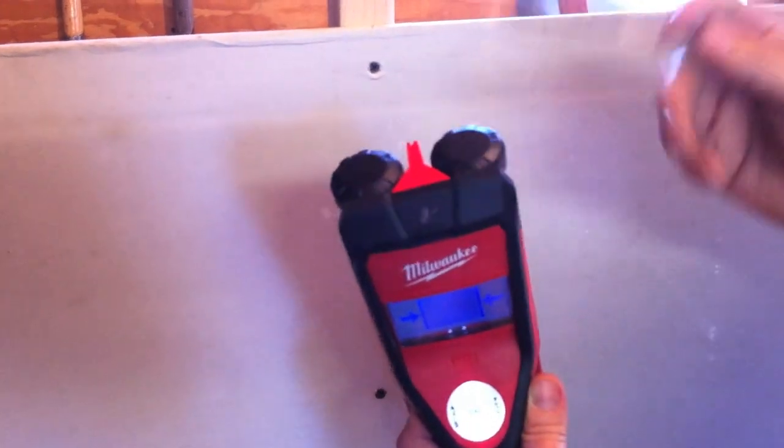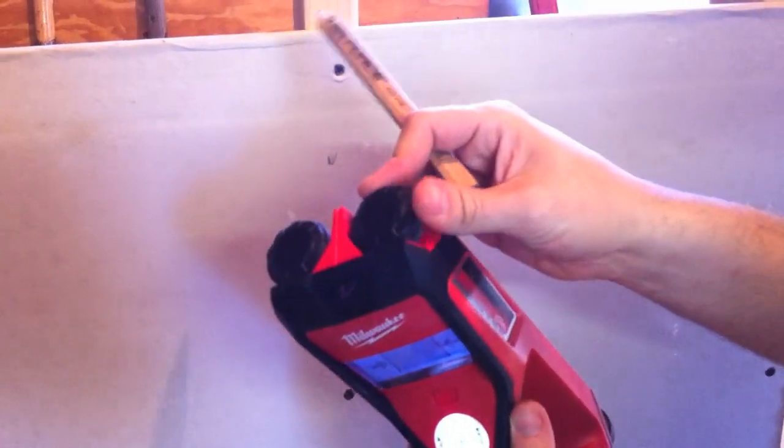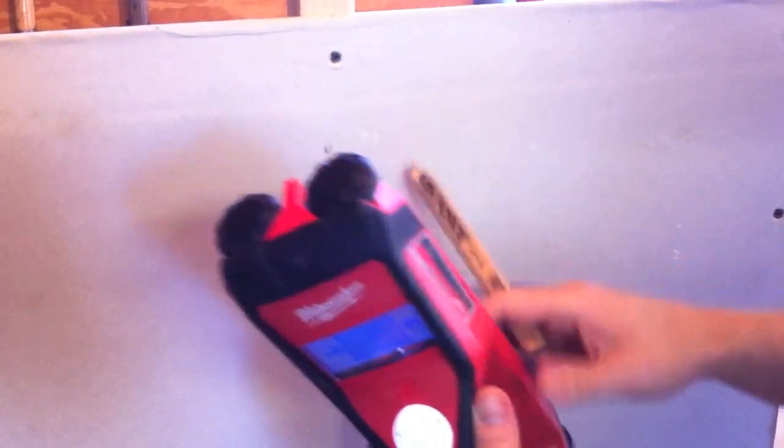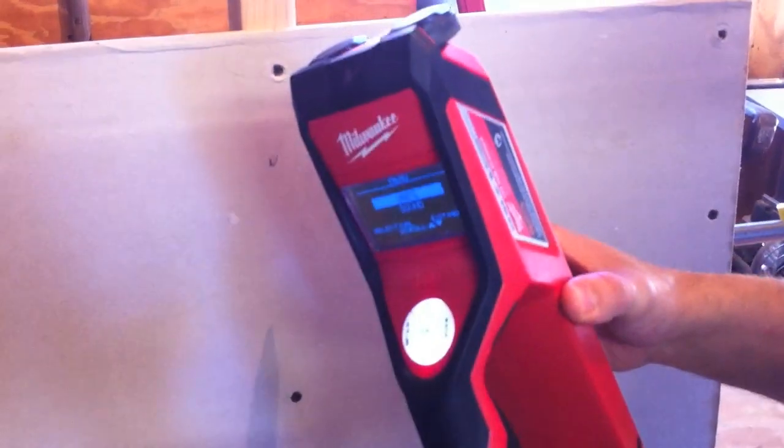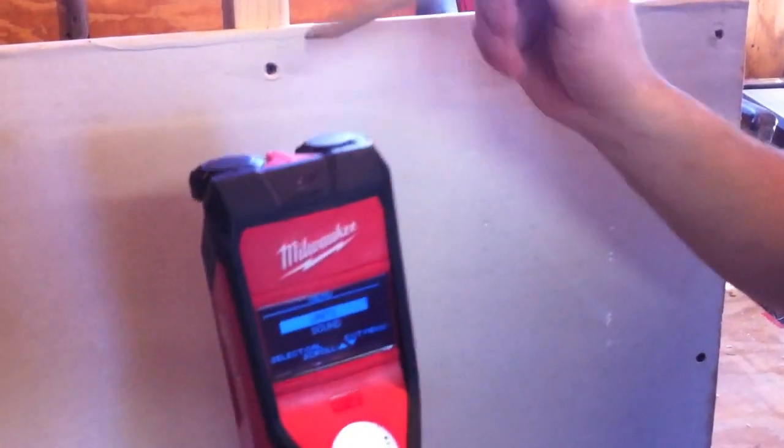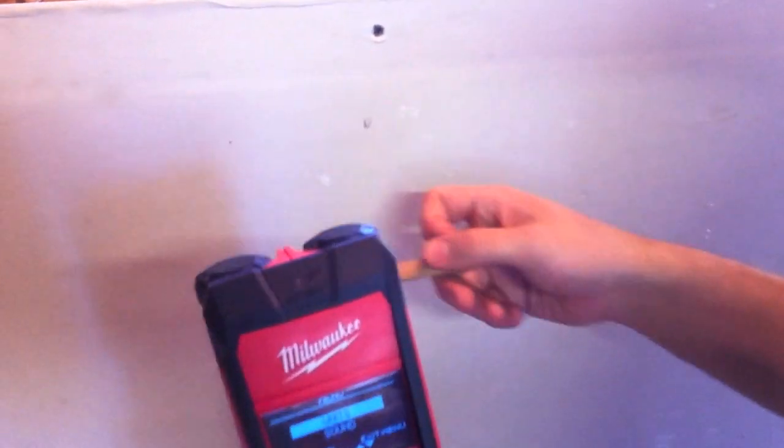The wheels really make it good to roll across the surface. They do have rubber grips on it, so it's not going to mar your surface. All in all, we really like this. Next thing we're going to show you is voltage. We're going to power up some voltage behind this wall and show you how it detects voltage.